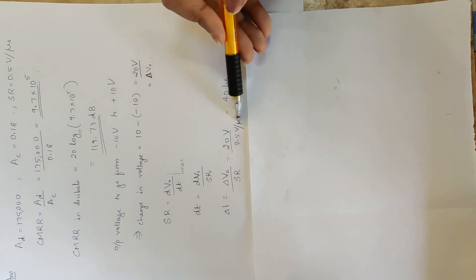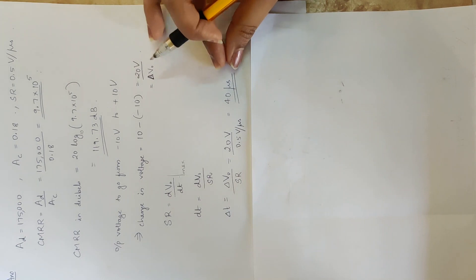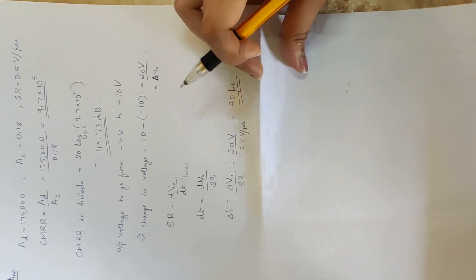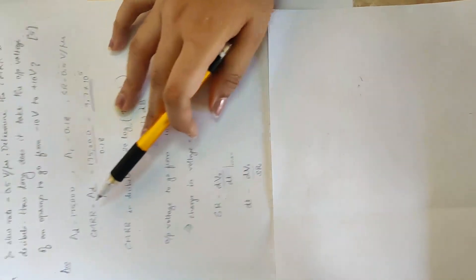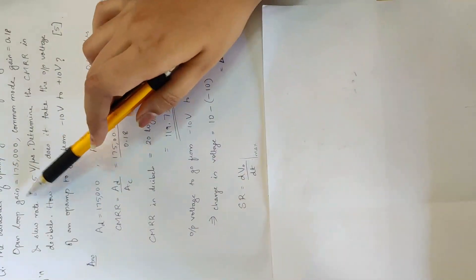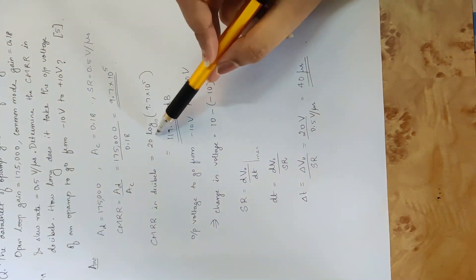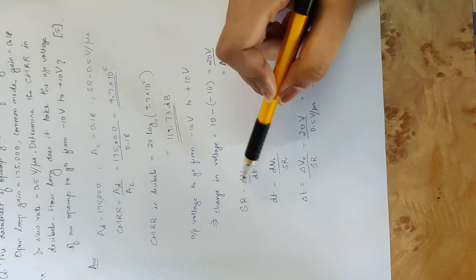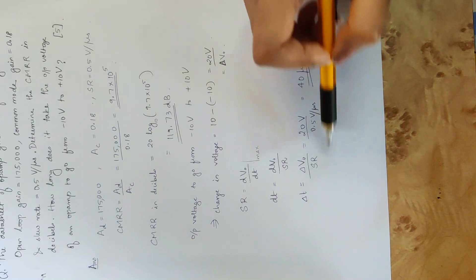We convert it into seconds and substitute directly in microseconds. The result is 40 into 10 raised to minus 6 seconds, that is 40 microseconds. Now the question is solved. CMRR is AD by AC; open-loop gain is AD. We convert CMRR to decibels using 20 log. We have slew rate and a particular change in voltage to complete this equation.